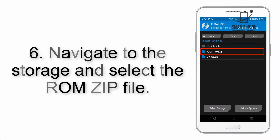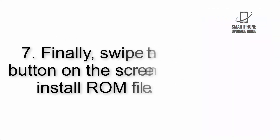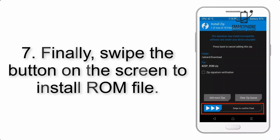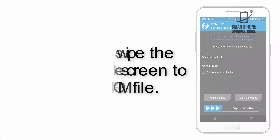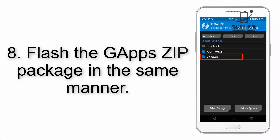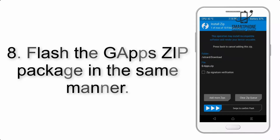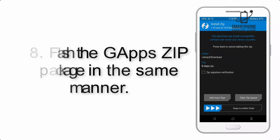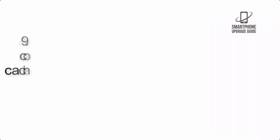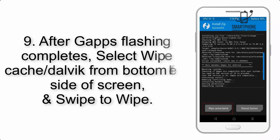Step 5: Go back to the recovery main screen and tap on the Install button. Step 6: Navigate to the storage and select the ROM zip file. Step 7: Finally, swipe the button on the screen to install the ROM file.